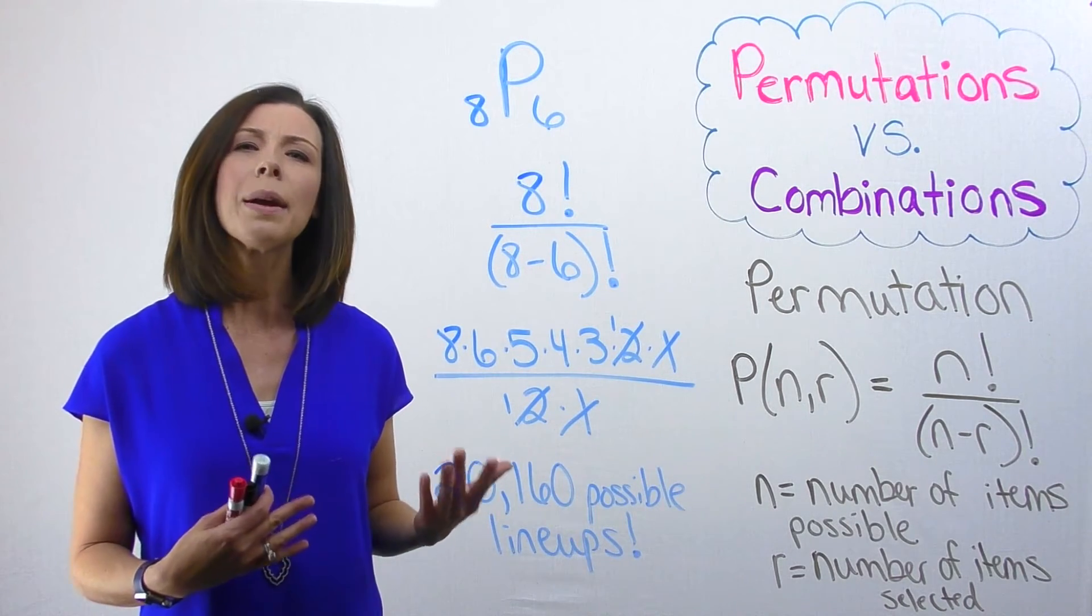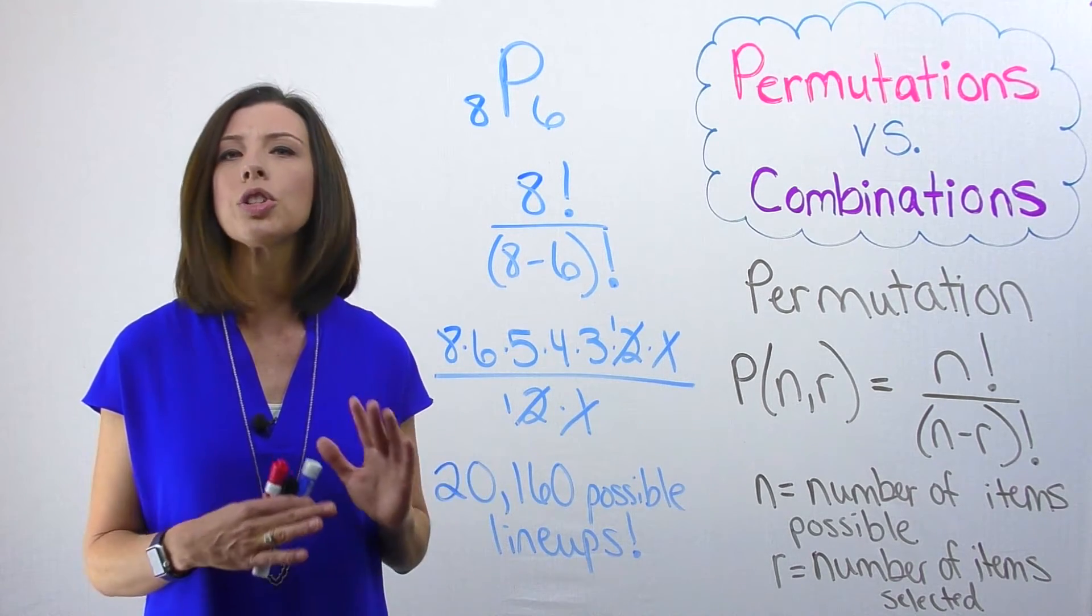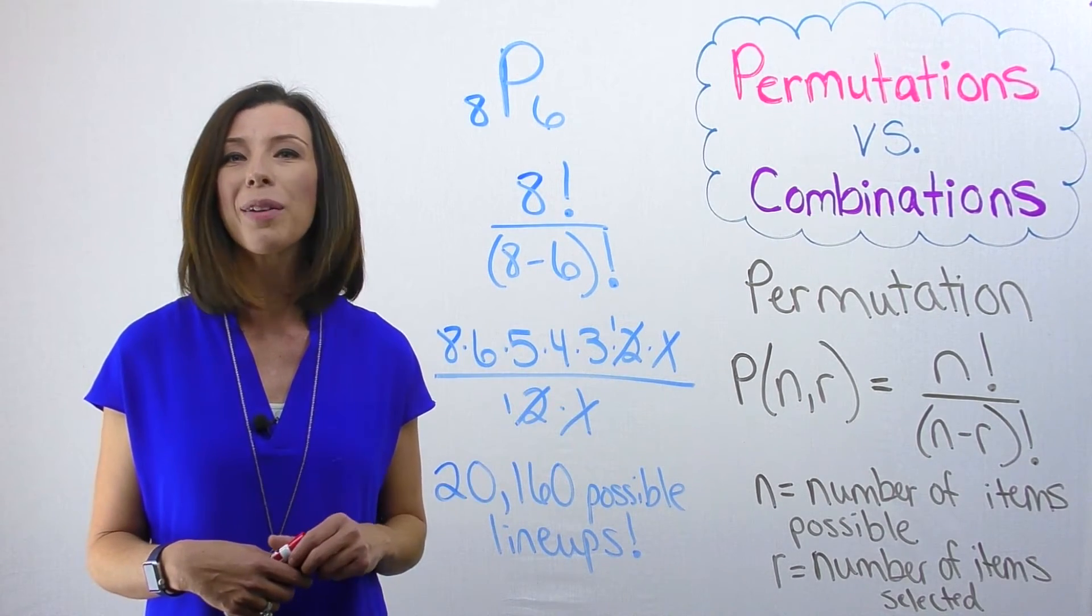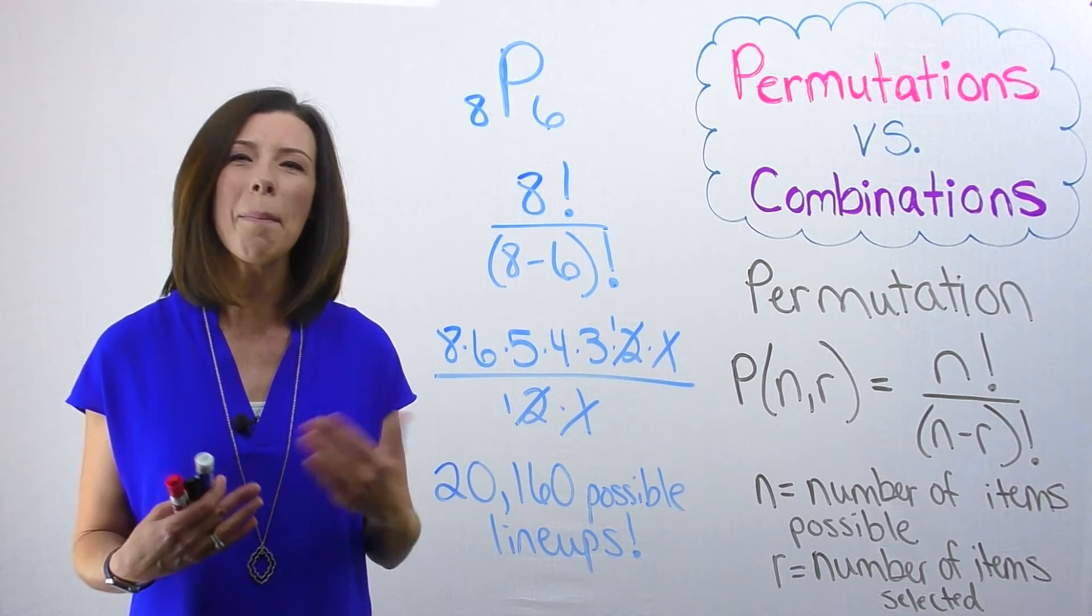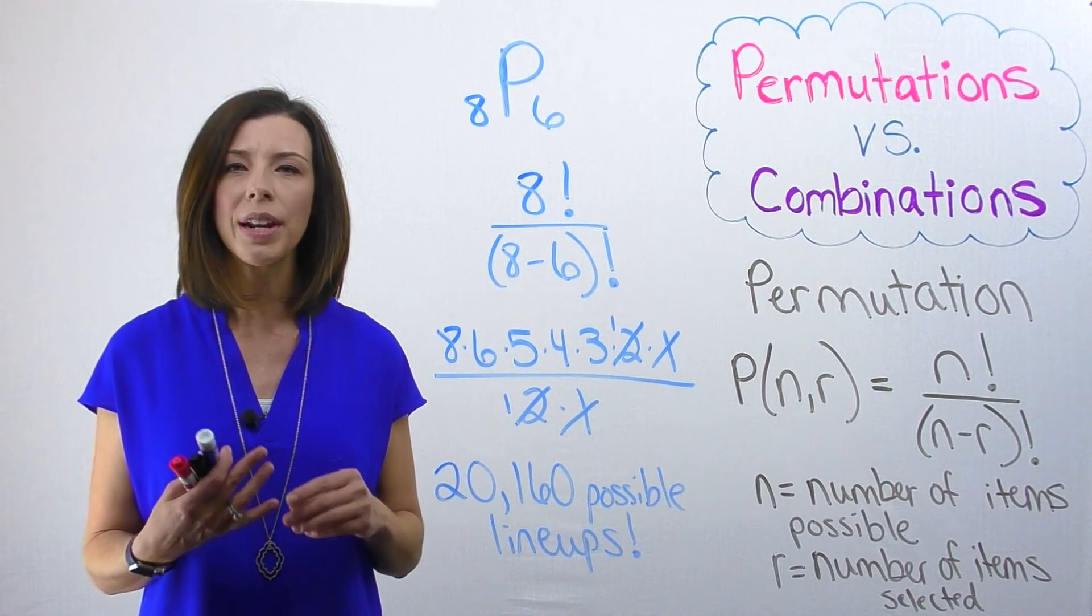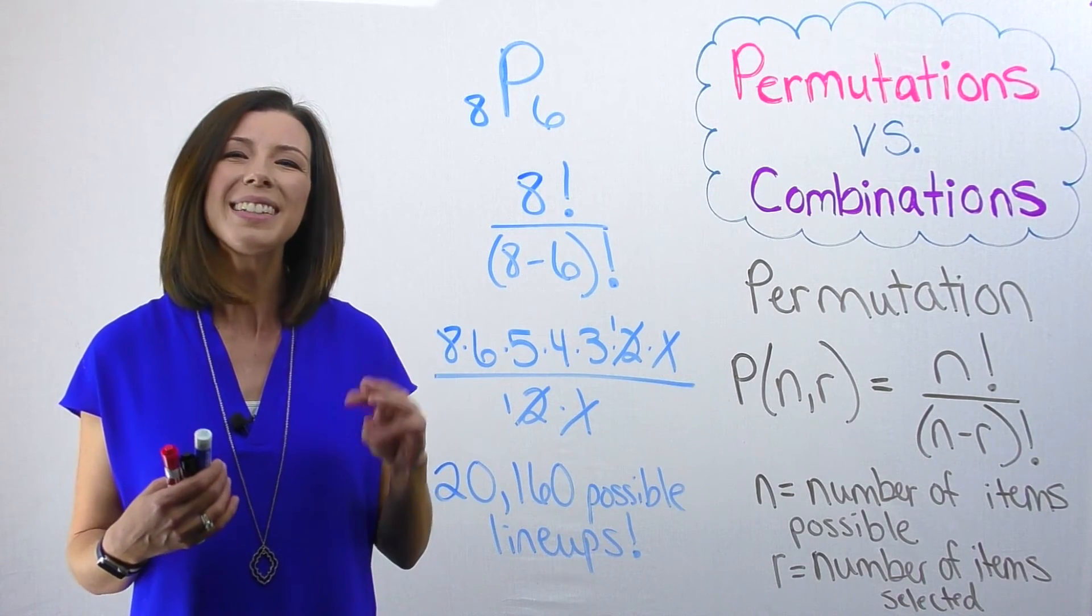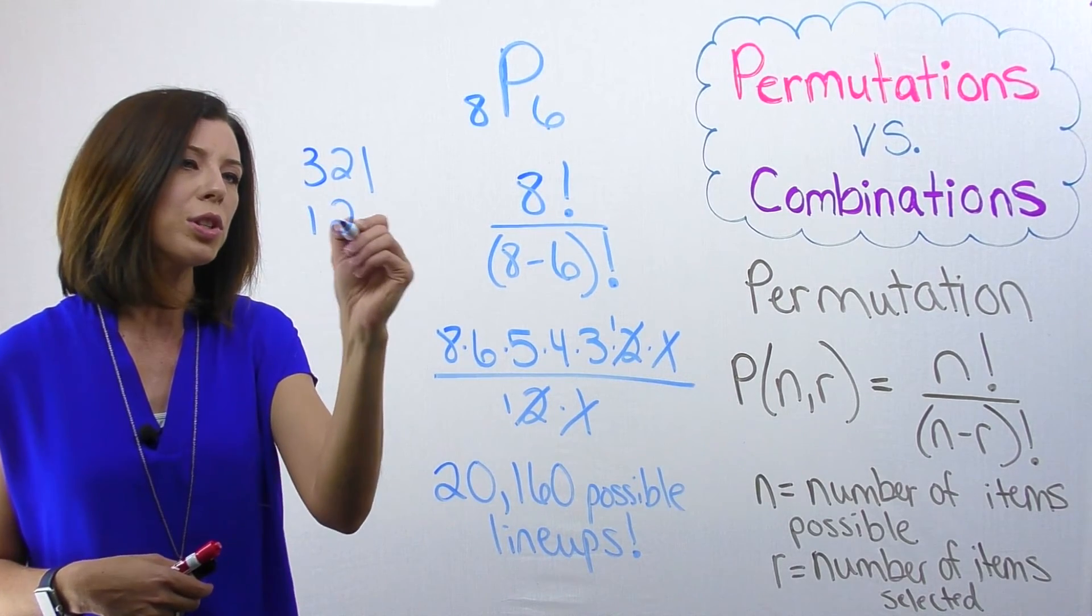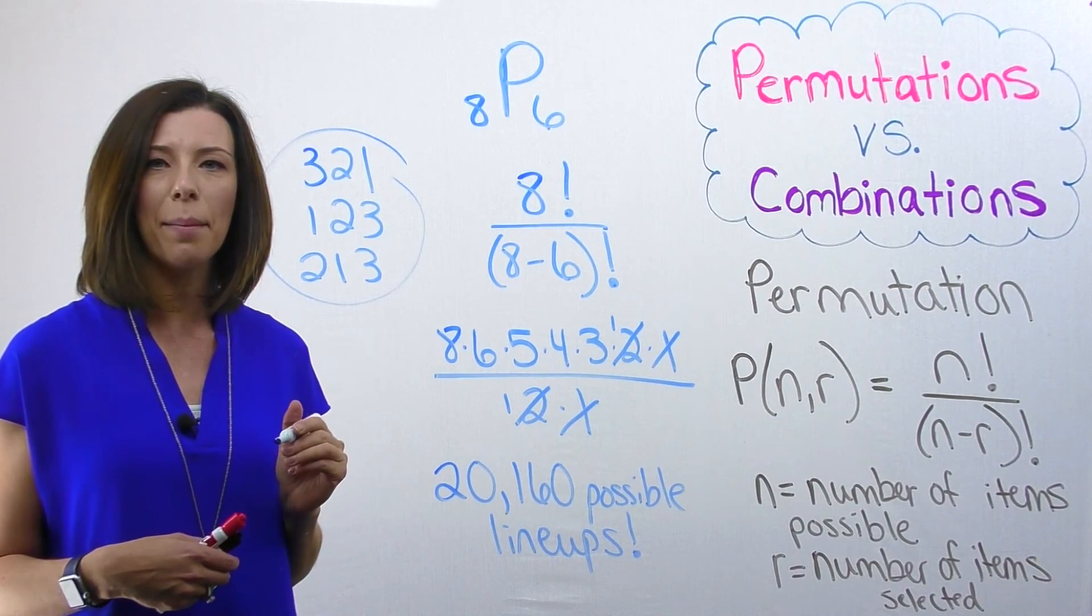Something else to consider. When we compare the amount of permutations compared to combinations, permutations will always be much greater. They will have a greater number than the number of combinations. This just comes from the fact that in combinations, it wouldn't matter which order I put my six people. When I think about combinations and I know that I'm picking three people, it doesn't matter the order I pick those people because three, two, one, one, two, three, and two, one, three will all be considered the exact same combination.